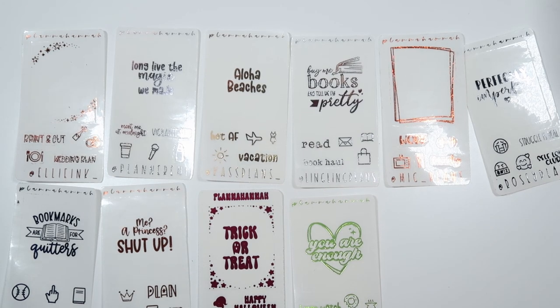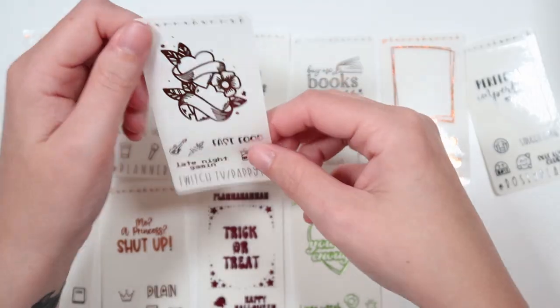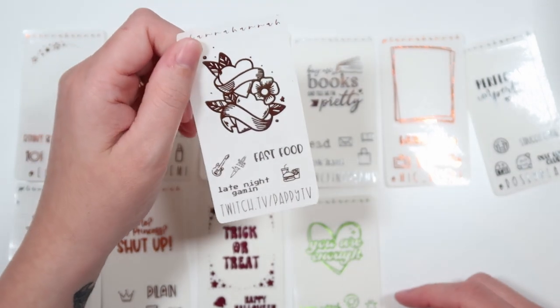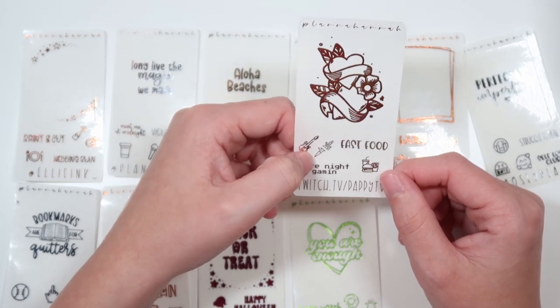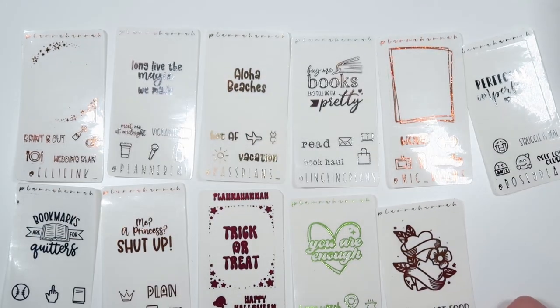And then we have Chris's freebie. It has a like tattoo icon overlay. And then the scripts are fast food and late night gaming. And then he's got the fast food icon, an electric guitar, and a little tattoo icon.